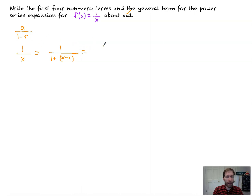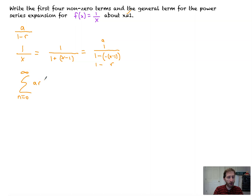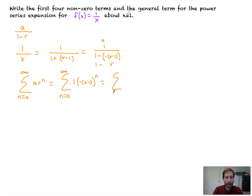But it's not quite 1 minus r. To make it that way, we're going to make this 1 over 1 minus (negative)(x minus 1). All I did is turn the plus into a minus of a minus of that term. That then gives you your a value, your 1, and your minus r. So now remember your template: n equals 0 to infinity of a times r to the n. In this case that equals the sum from n=0 to infinity, where r is negative (x minus 1), which you can write as negative 1 to the n times (x minus 1) to the n.